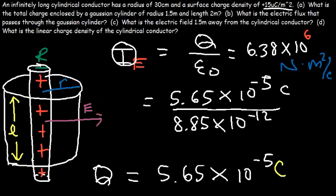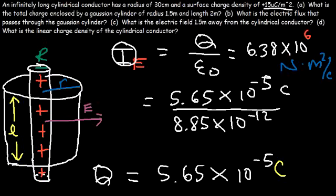Electric flux is basically electric field times area. The units for electric field are newtons per coulomb, and area is square meters, so putting those together gives newton·meters² per coulomb. That's the electric flux passing through this Gaussian surface.